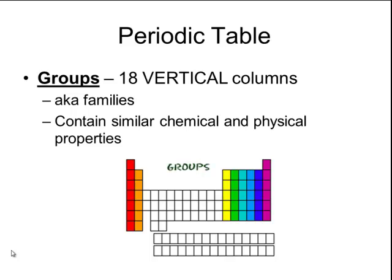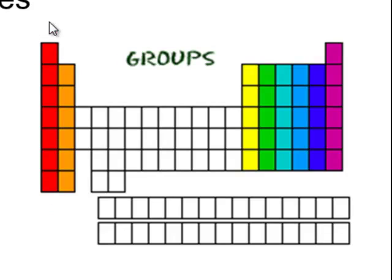So for example, all of the elements that are in this red group right here, called the alkaline metals, are flammable in water, very soft metallic compounds. All of these ones over here that are in purple are all gases that don't react at all.